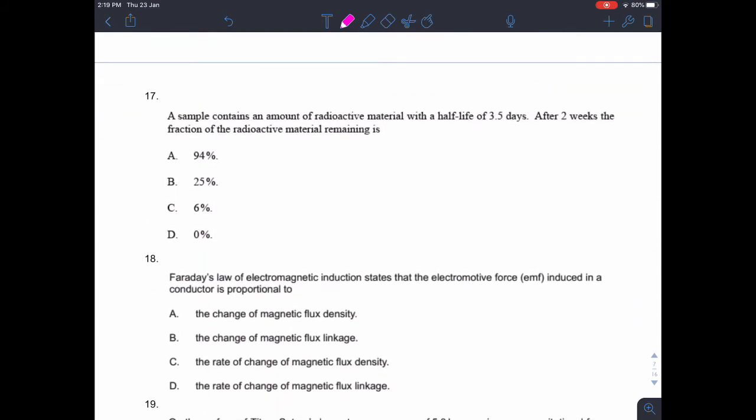Question 17. A sample contains an amount of radioactive material with a half-life of 3.5 days. After two weeks, the fraction of the radioactive material remaining is what? Well, two weeks, 3.5 days is half a week. So after two weeks, that's four half-lives. So after four half-lives, if we have 100% to start off with, then we have 50% after one, 25% after two, 12.5% after three, and about 6%, 6.25% after four. So that gives us C.